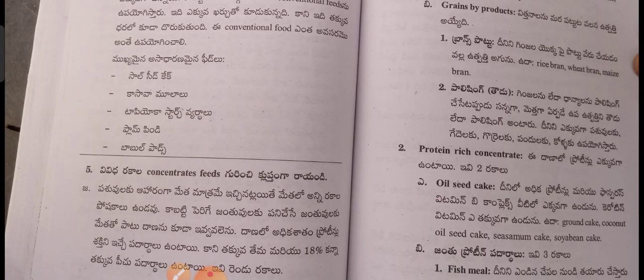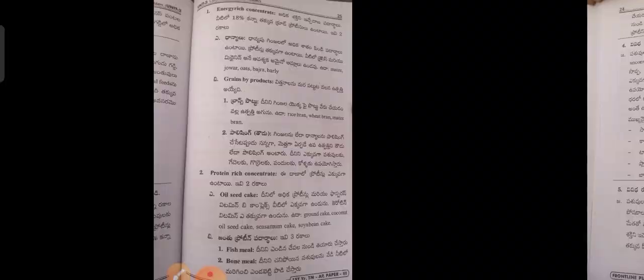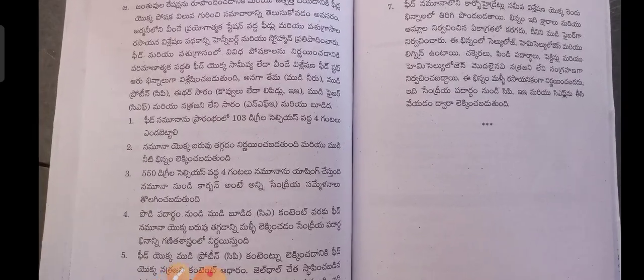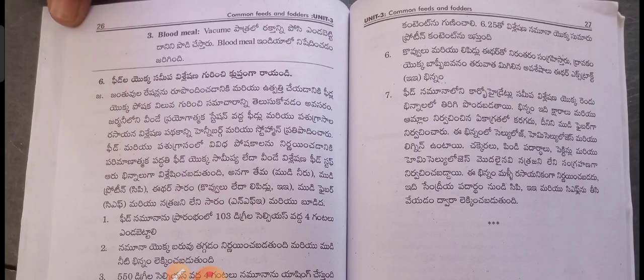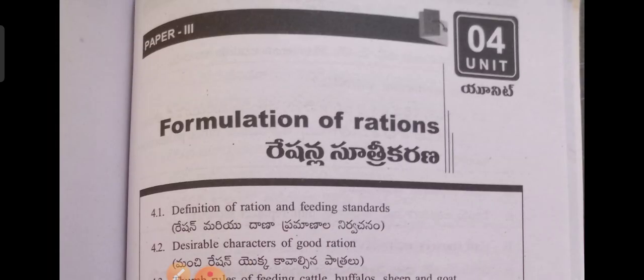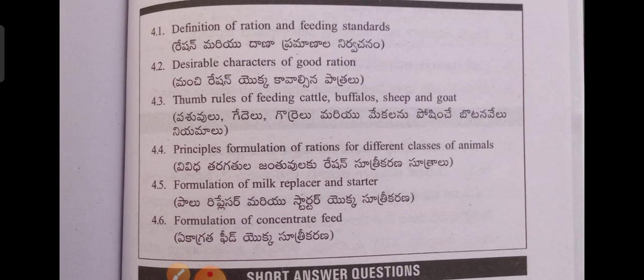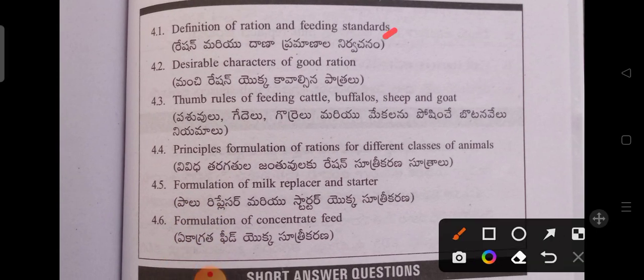Protein-rich concentrate feeds. Next, the fourth unit is Formulation of Rations, which has six sub-topics: 1, 2, 3, 4, 5, 6.